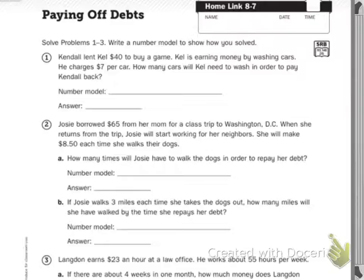Kendall lent Cal $40 to buy a game. Cal is earning money by washing cars. He charges $7 per car. How many cars will Cal need to wash in order to pay Kendall back? So he borrowed $40. He's washing cars for $7. Equals, your answer goes here.